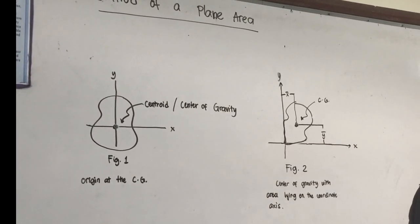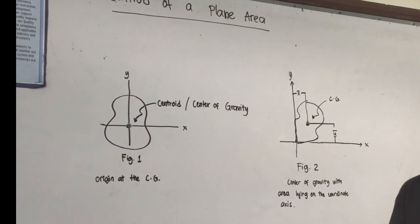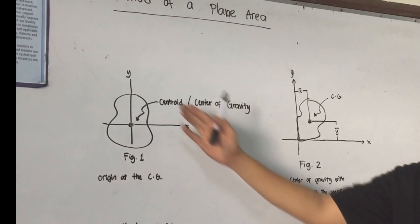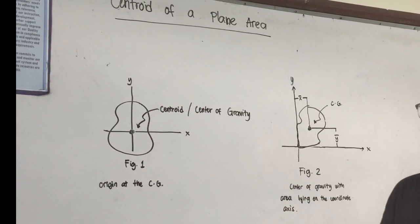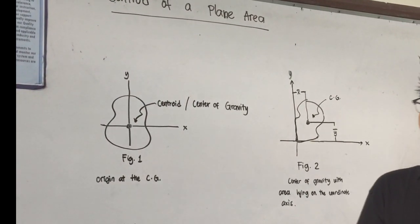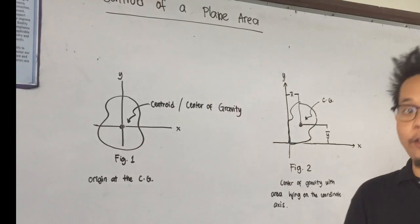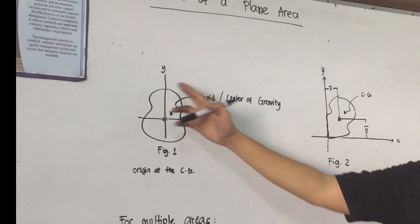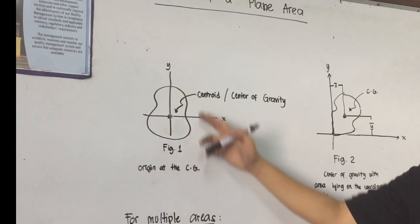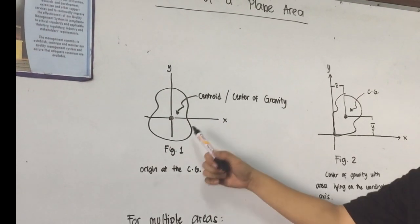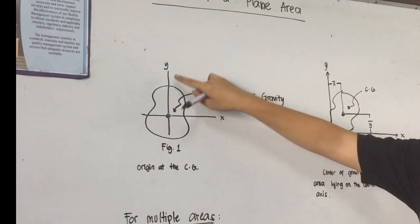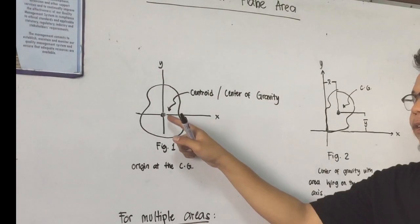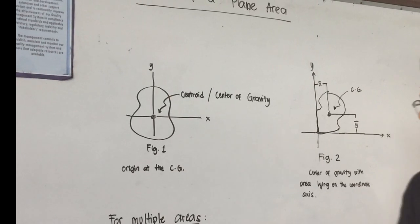We will be discussing a special topic which focuses on finding the centroid or the center of gravity of our area. Knowing that we have our center of gravity, it is always situated at the center of a certain area. In an irregularly shaped area, how can we find its center of gravity or its centroid? We will use calculus. In this figure, notice that our area is an irregularly shaped object situated at the origin. We have our x and y-axis. Our centroid is basically at the center, also at our origin.